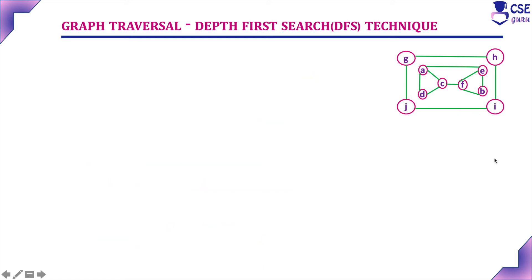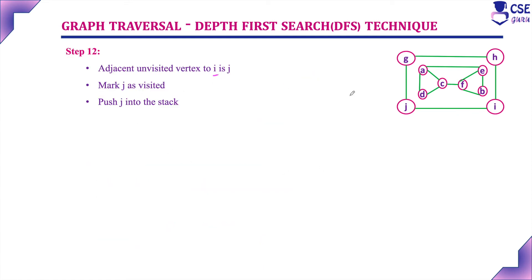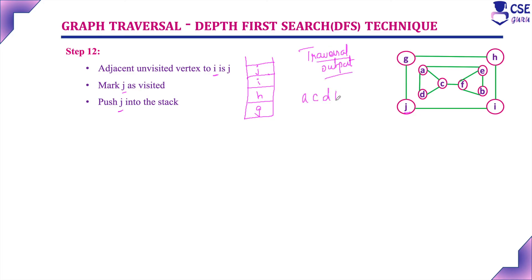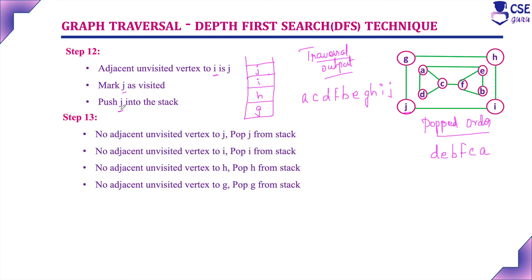Currently visited vertex is I. Consider adjacent unvisited vertex to I, that is J. Mark J as visited and push J into the stack. Stack contents are G, H, I, J. Traversal output is A, C, D, F, B, E, G, H, I, J. Adjacent vertices to J are G and I — both already visited, so there is no adjacent unvisited vertex to J. Pop J from the stack. Stack is now G, H, I.